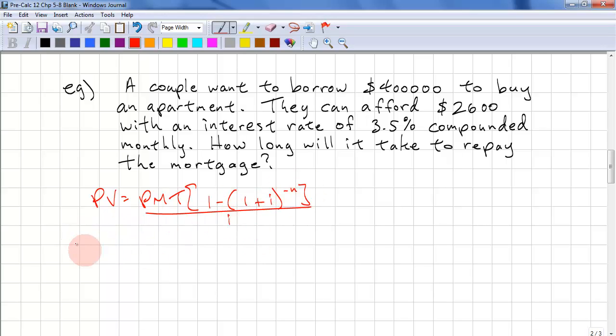Now we substitute our values. $400,000, that's five zeros. $2,600, 1 minus 1 plus .035 divided by 12 raised to the power of negative n, all over .035 divided by 12. Common mistake is to put the annual interest rate in and forget to divide by the compounding period. So please remember to add that compounding period into the factor for I.